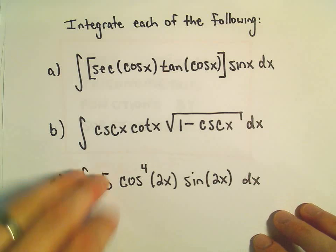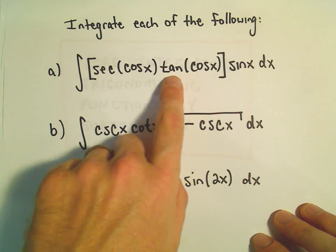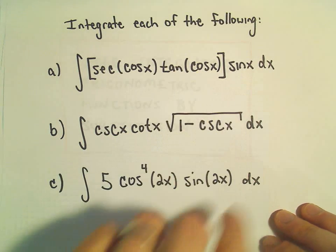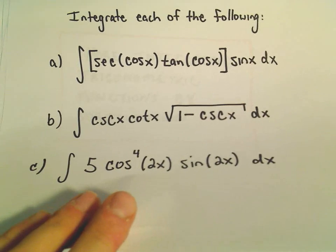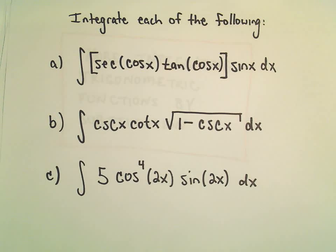So in part A here we have secant of cosine x times tangent of cosine x times sine x. So the first thing, again, the things that I see here...